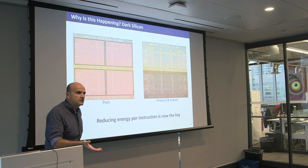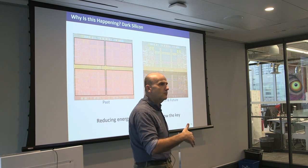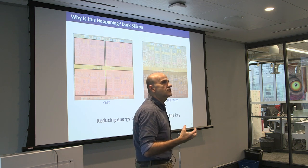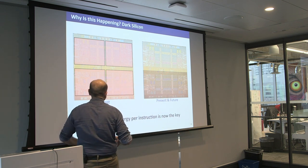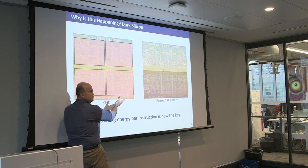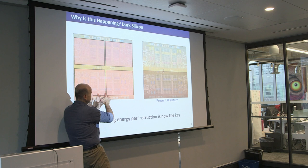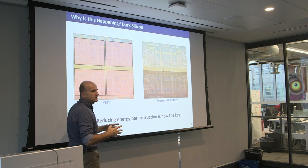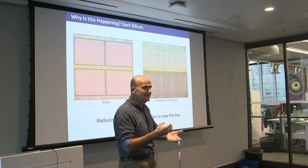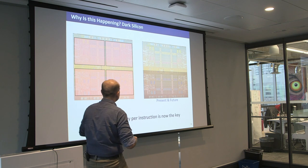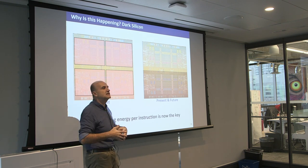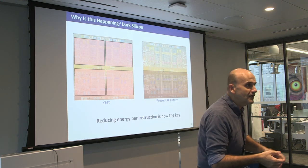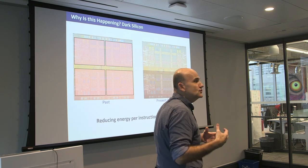Why is this happening? The fundamental reason has to do with semiconductors. It used to be that every two years, for the same chip area, the people doing semiconductor physics could give you enough resources to get that 2x. The new transistors would run faster as well, and you could try to use all those resources to build a faster machine.